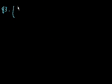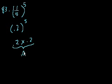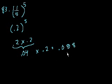What is the decimal equivalent of 1/5 to the 5th power? Let's write 1/5 as a decimal - that's 0.2. So it's 0.2 to the 5th power. Let's just multiply it out. 0.2 times 0.2 equals what? 2 times 2, and we have two digits behind the decimal, so it's 0.04.